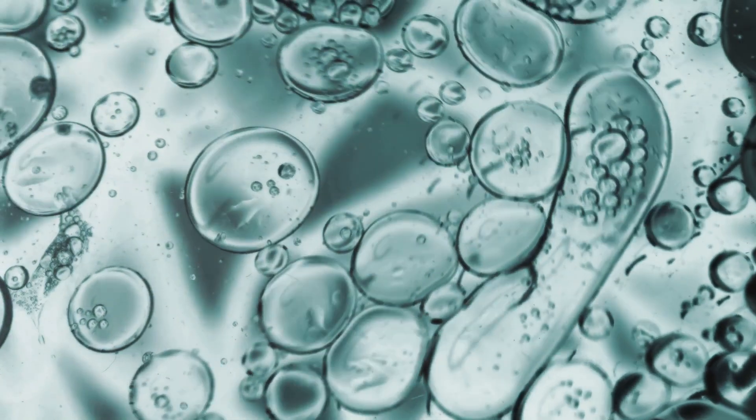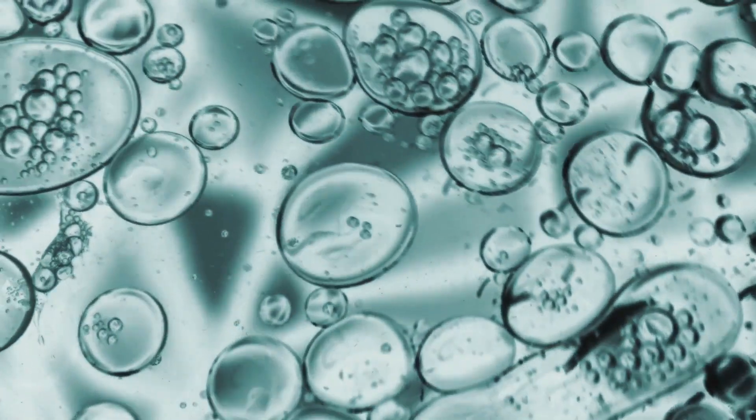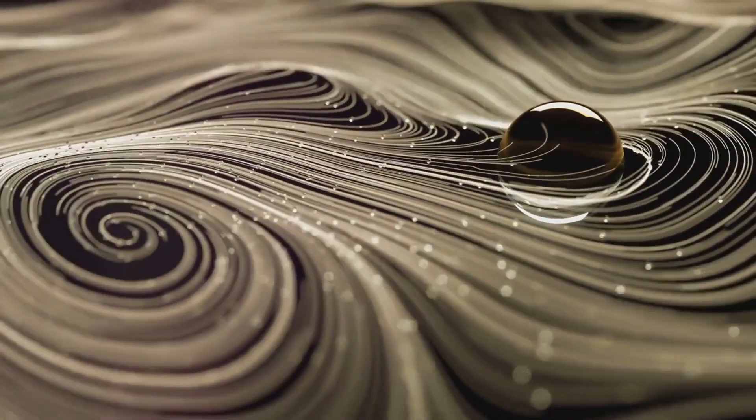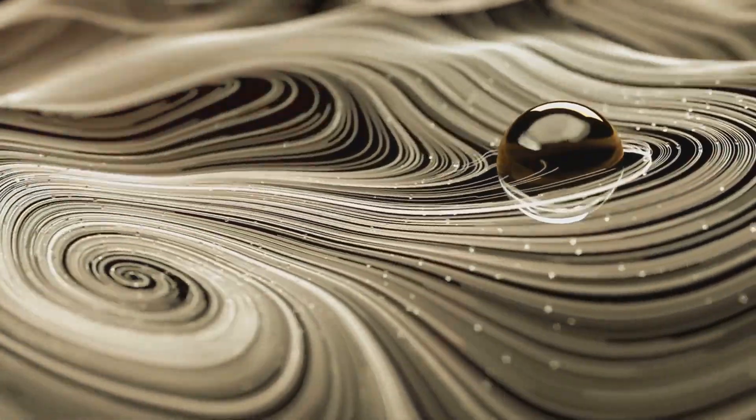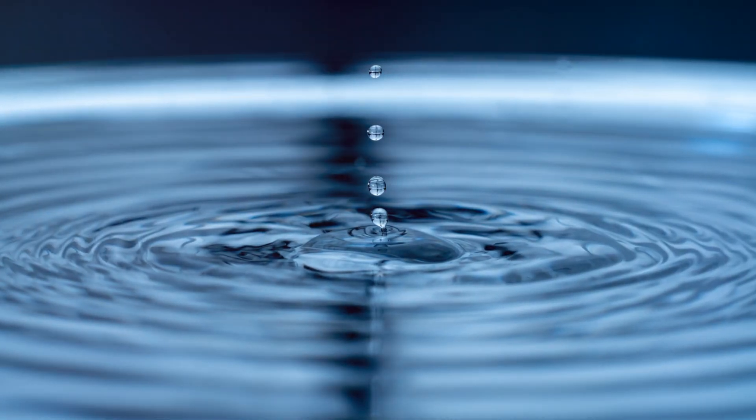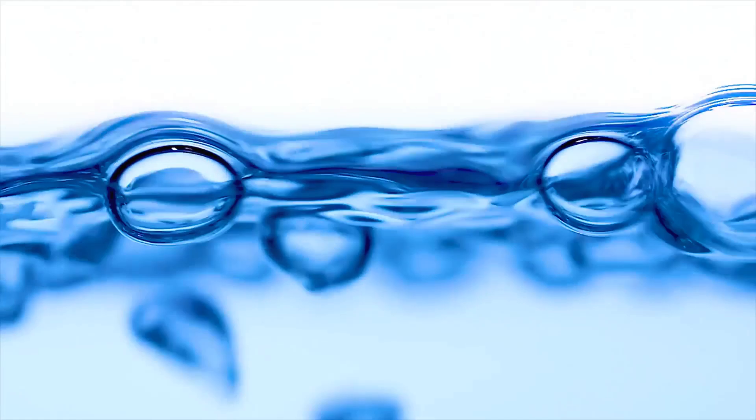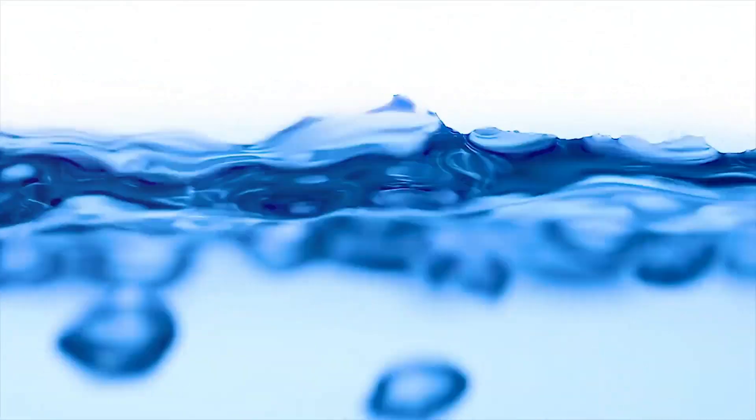Surface tension arises from the attraction between the molecules of the liquid. These molecules like to stick together and resist anything that tries to pull them apart. This is why water forms spherical droplets. A sphere has the smallest surface area for a given volume.